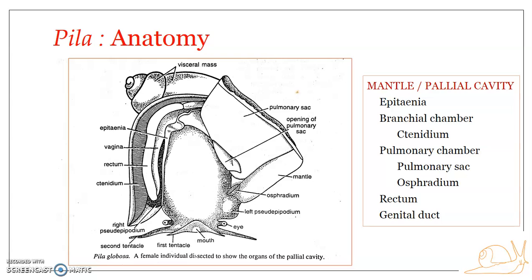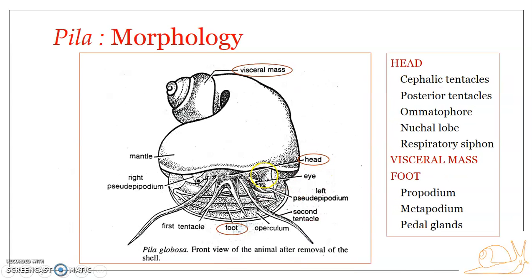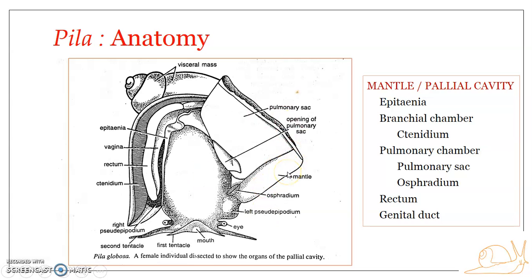The hypostracum is secreted by the epithelial lining of the mantle. The nuchal lobes are dorsolateral projections of the mantle. During aerial respiration, the left nuchal lobe rolls out to form a tube-like structure communicating the mantle cavity with the external environment. So the mantle secretes the shell — mainly the two outer layers, the periostracum and ostracum — while the hypostracum is secreted by the epithelial cells of the mantle.